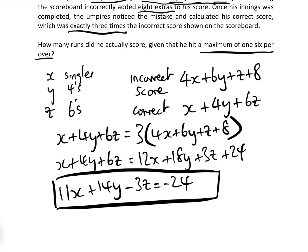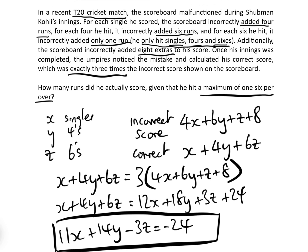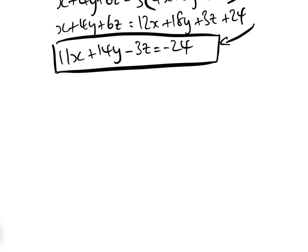Now, there are an infinite number of integer solutions to this, but hopefully — presumably how the question was designed — there is only one set of integer solutions which satisfy all of the constraints. The first thing we have to do is get the general solution for X, Y, and Z of this three-variable Diophantine equation. For anybody who hasn't watched the video I did the other day explaining how to solve three-variable Diophantine equations, please feel free to go and watch that — the link is in the description.